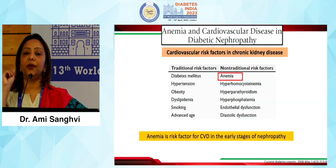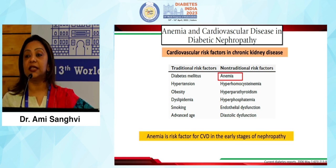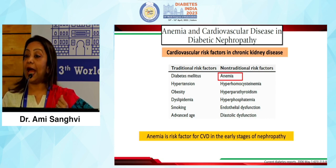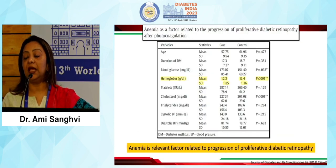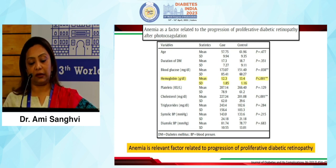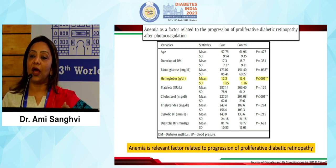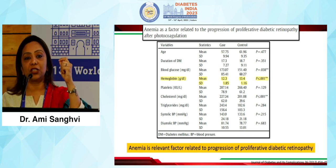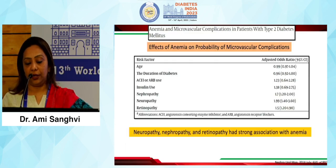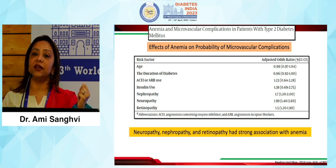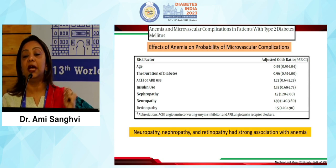Why are we talking about anemia so much? Anemia is a risk factor for various micro- and macrovascular complications. It is a risk factor for CVD and heart failure, and in the early stages of neuropathy. It has also been seen as a relevant factor for progression of proliferative diabetic retinopathy — patients with anemia, possibly because of hypoxia and neovascularization, can develop diabetic retinopathy. The risk of neuropathy and nephropathy also increases strongly with anemia. Even in diabetic foot ulcers, studies have shown that 5% of patients with diabetic foot ulcers have anemia.